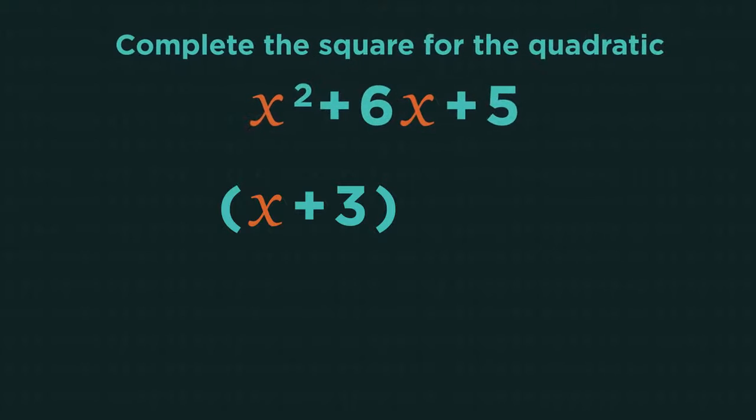So in this video we're going to look at how to complete the square. Let's have a look at an example. We take half of the x term and put it into our bracket with x. So half of six is three. Square the bracket, so x plus three squared.